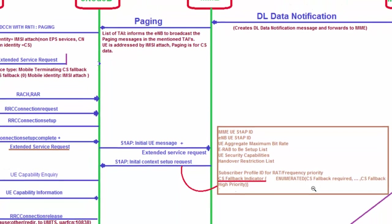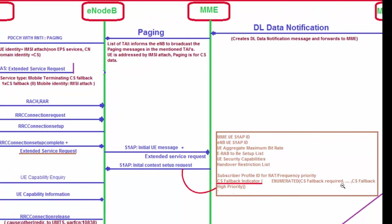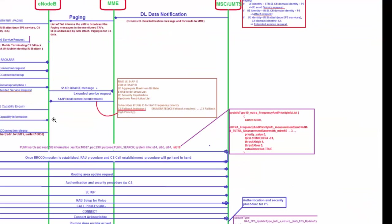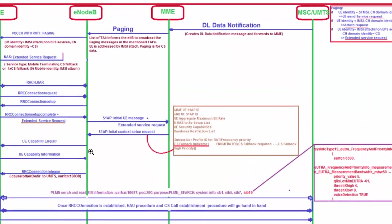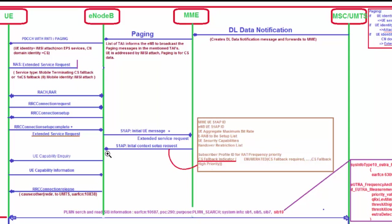The MME adds a CS Fallback Indicator in the Initial Context Setup Request message. This CS Fallback Indicator contains information about whether CS Fallback is required or has higher priority — it is an enumerated value of zero or one. When this information is sent to the eNodeB, the eNodeB reads the Initial Context Setup Request and sees that there is a CS Fallback indicator. The eNodeB also notices there is no UE capability information, so it sends a UE Capability Enquiry to the UE.